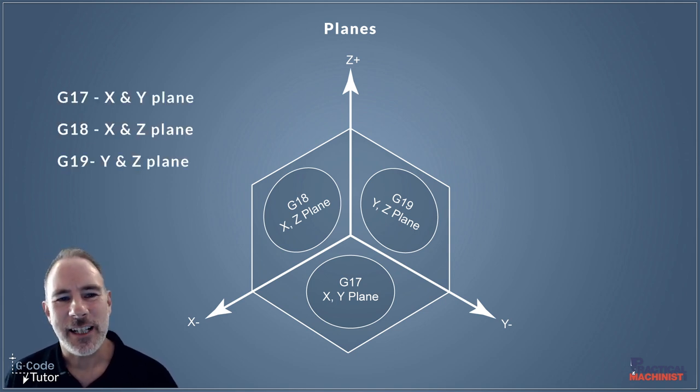Now we can see that our G17 plane says it's our X and Y plane, and we can visually see why that works. As our X and Y plane cross over, that's the plane that we are representing with G17, and G18 there with our X and Z, and also G19 with Y and Z.